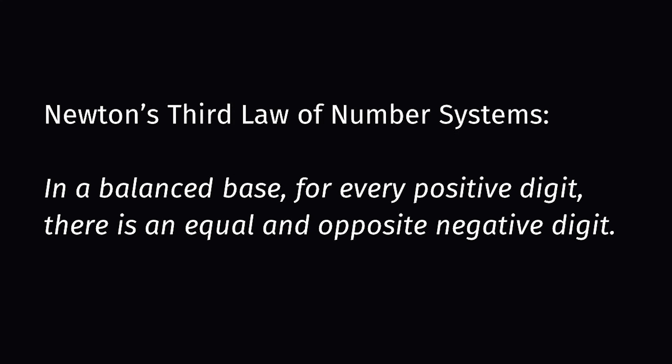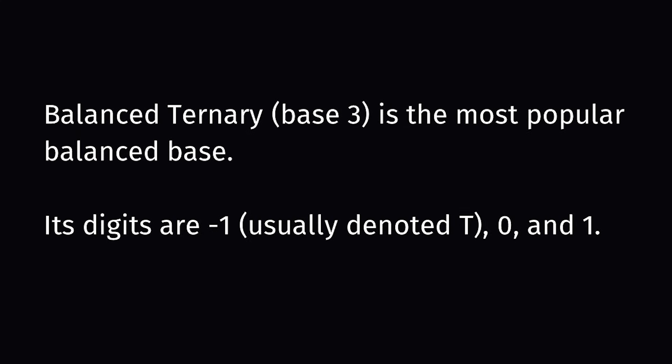In a balanced base, every positive digit has an equal and opposite negative digit. You also have 0. So when you take all the pairs of digits and 0, you see that the only way to make a truly balanced base is to use an odd base. If you try to balance an even base, like decimal, you would have to skew it either in favor of positive or negative digits. The smallest way, therefore, to make a truly balanced base is to just have the digits 1 and negative 1, which, when you include 0, makes 3 digits. So you can call this balanced ternary, as in balanced base 3.